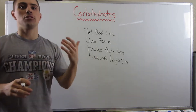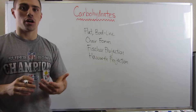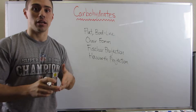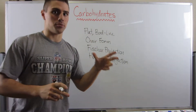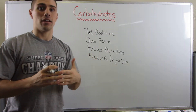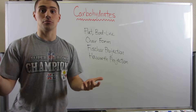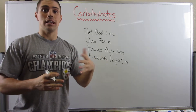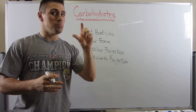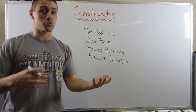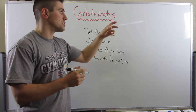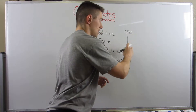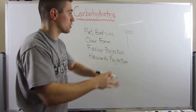Now that we've had that intro video to talk about words like hexose, pentose, 6-carbon sugar, 5-carbon sugar, and other words like ketose and aldose — ketose meaning that the carbonyl is somewhere in the middle of the sugar structure, aldose meaning you have that CHO up top and the rest of the sugar that follows.